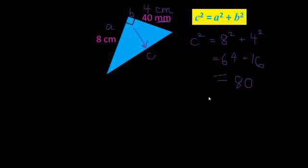Now to work out what C is, because that's what C squared is equal to. To work out what C is, I need to take the square root of 80. And that's not a perfect square number, so you're probably going to have to use your calculator to give you an answer. The square root of 80 is about 8.9 centimeters rounded to one decimal place.